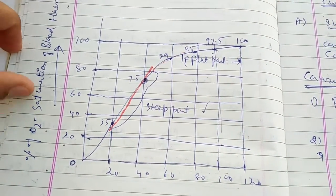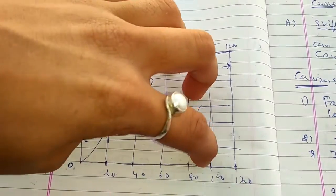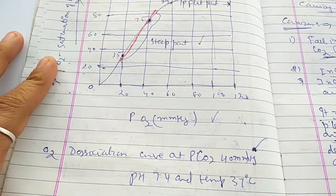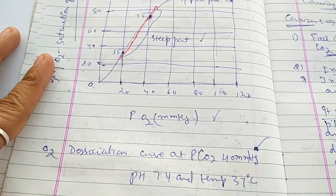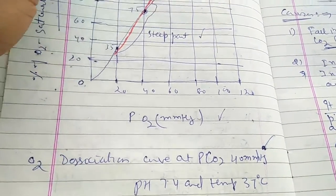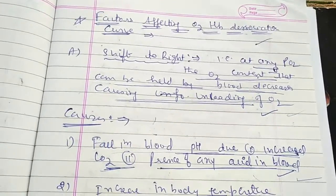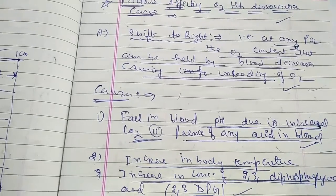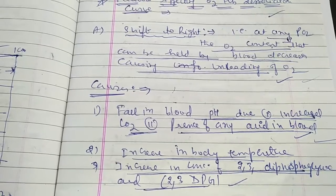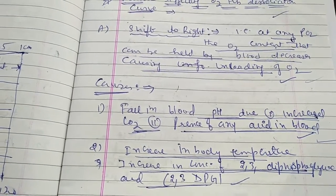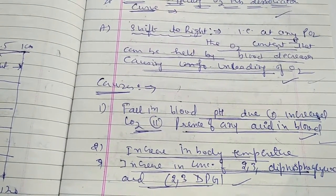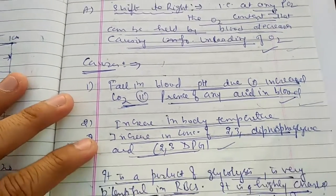The curve shows the percentage of oxygen-saturated hemoglobin against the partial pressure of oxygen. The oxygen dissociation curve is measured at a partial pressure of 40 mmHg, pH 7.4, and temperature 37°C. Next, the factors affecting the hemoglobin dissociation curve: if another gas is present in the blood, hemoglobin will dissociate from oxygen and the oxygen content decreases.